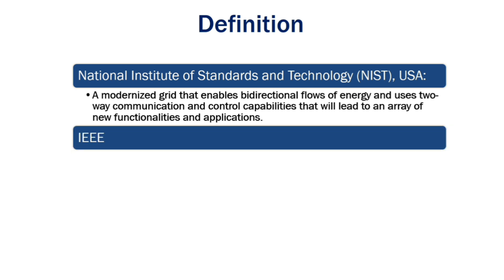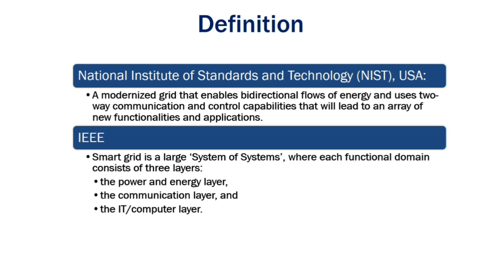According to IEEE, smart grid is a large system of systems where every functional domain consists of three layers: the power and energy layer, the communication layer, and the IT/computer layer. Layers two and three are the enabling infrastructures that make the existing power and energy infrastructure smarter.